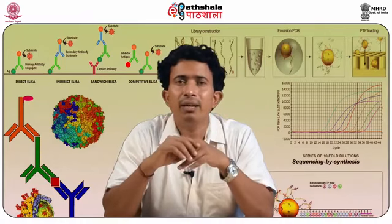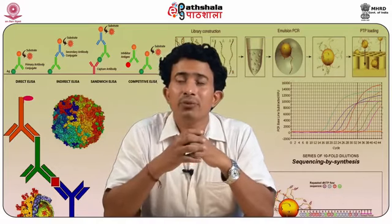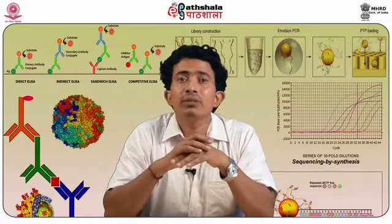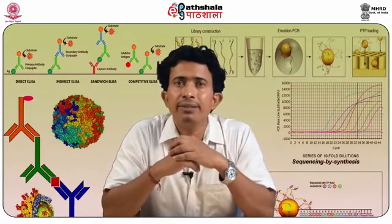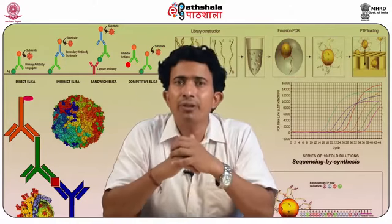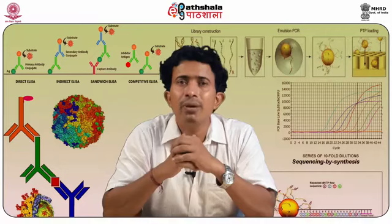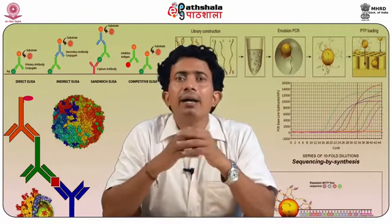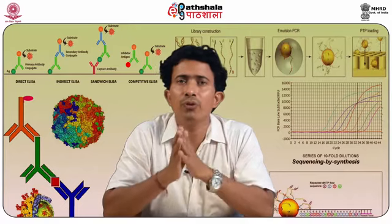What should be the properties of an ideal biomarker? The ideal biomarker should produce reproducible and reliable results. It should be less time consuming and cost effective. The results should be easily interpreted. It should be time effective and not be altered by different environmental conditions. It must be accurate, sensitive, and specific for the concerned disease, and must be readily accessible for all kinds of body fluids.